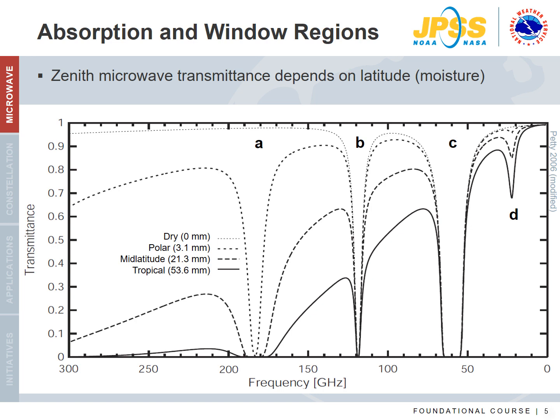Oxygen is a well-mixed constituent in the atmosphere, while water vapor is not. Based on the transmittance spectra for dry, polar, mid-latitude, and tropical regions, which two of the four spectral regions labeled A, B, C, and D correspond to oxygen absorption? We encourage you to pause the video and think about this.